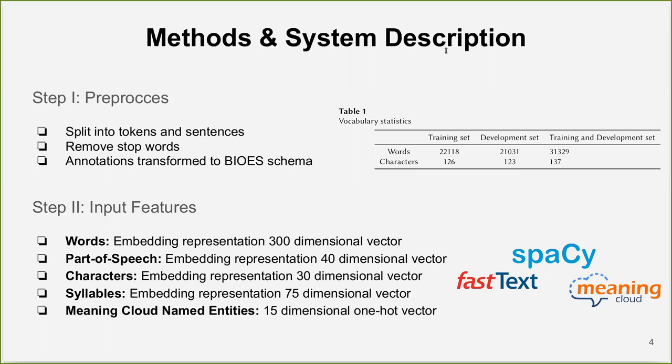Syllables: Syllable-level embeddings of the words, learned during training and resulting in a 75-dimensional vector, are also added. Like character-level embeddings, they help deal with words outside of the vocabulary and contribute to capturing common prefixes and suffixes in the domain and correctly classifying words.